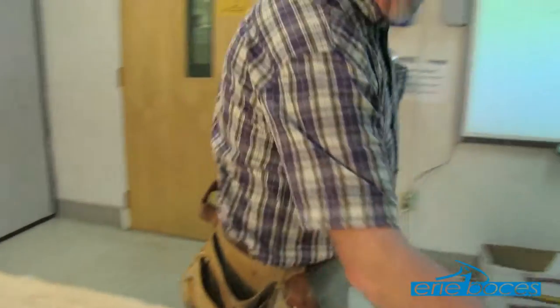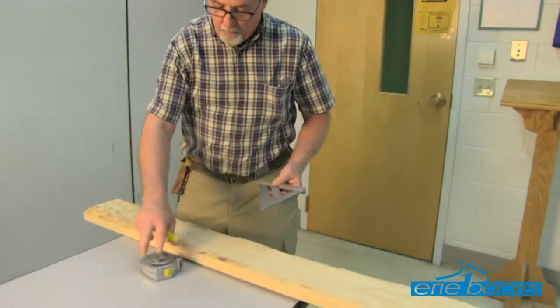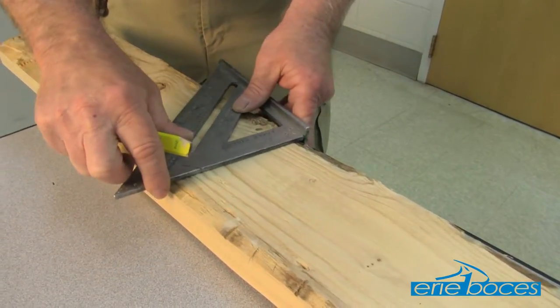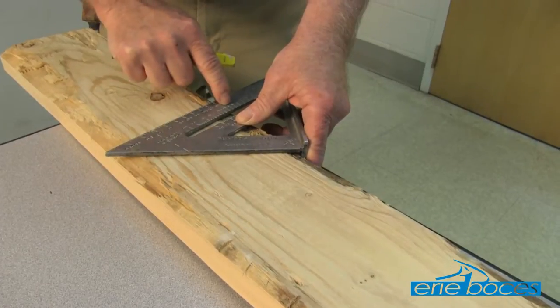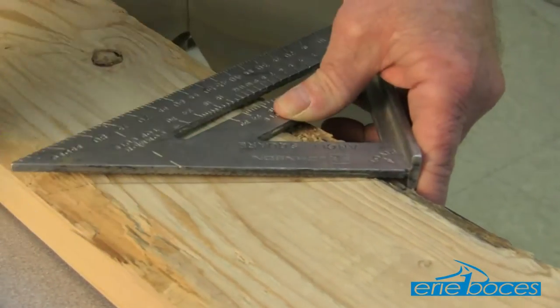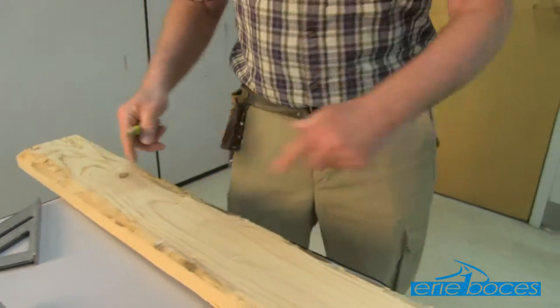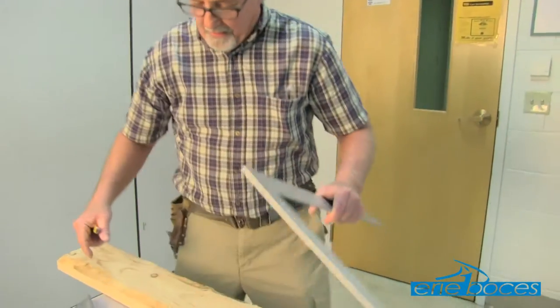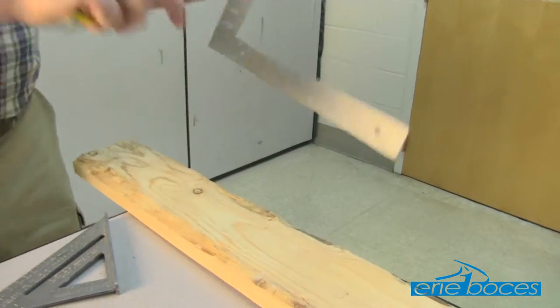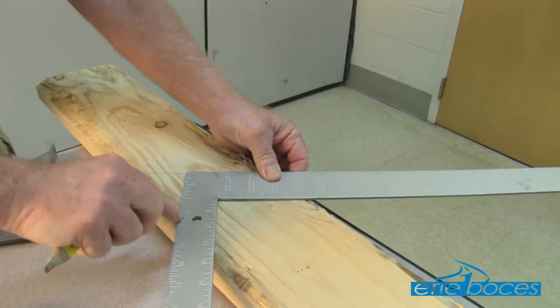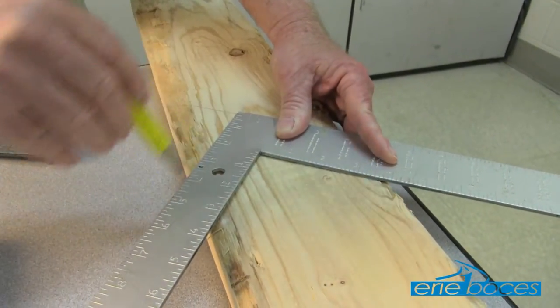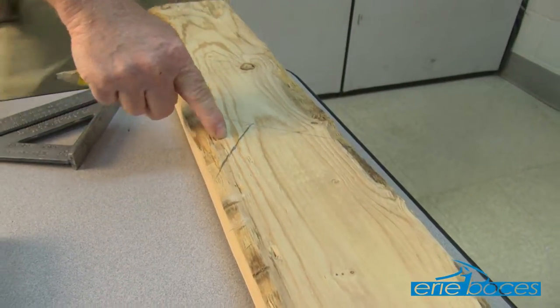The next step is to mark the plumb cut for the bird's mouth. We do it the same way we marked the plumb cut at the ridge board — set the pivot point at that 90-inch mark, pivot until you read 9 on the common cut, and mark your plumb cut. Then mark your seat cut, which is the level cut that the bird's mouth will sit on. Since we have a 2x4 exterior wall with a double top plate, we want 3 inches of bearing, so we come perpendicular to our plumb cut and read 3½ inches — the actual dimension of a 2x4 — and mark the seat cut.